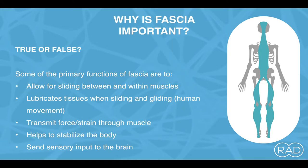So why is fascia so important? True or false — some of the primary functions of fascia are to allow for sliding between and within muscles, to lubricate tissues when sliding and gliding to produce human movement, to transmit force and strain through muscle, and to help stabilize the body and send sensory input to the brain. Absolutely all true.